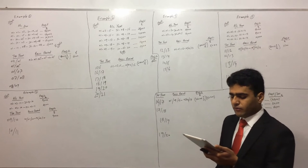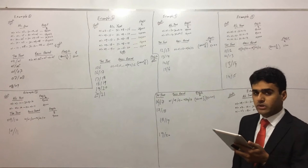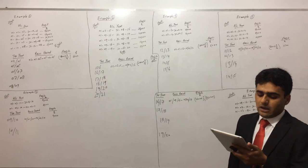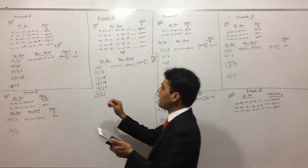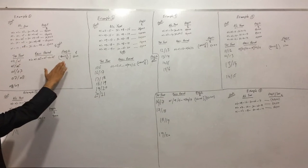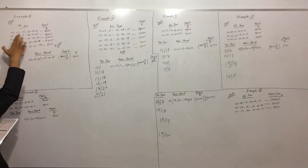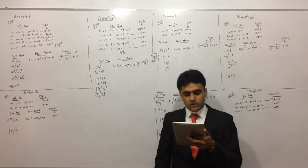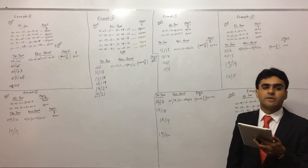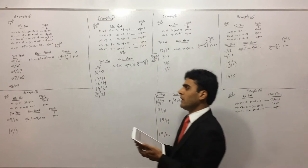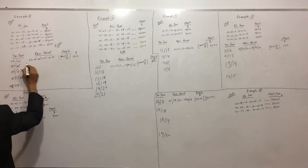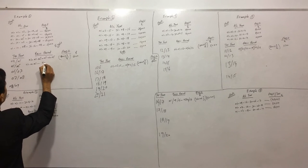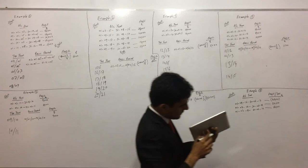On the second basis period rules: the first rule says if the first accounting period is more than 12 months — but ours is 9 months, so we skip that. The second rule says if the first accounting period is less than 12 months, then the basis period is the first 12 months of the trade. Our first accounting period is from 1st January 2005 to 30th September 2005, which is 9 months and less than 12. So the basis period is from 1st January 2005 to 31st December 2005.